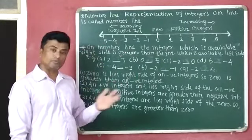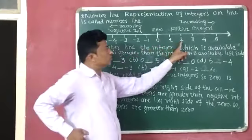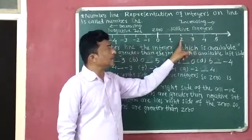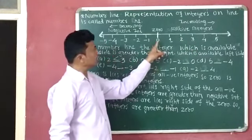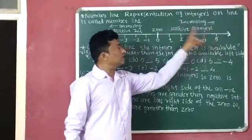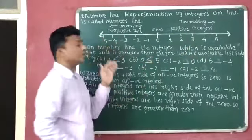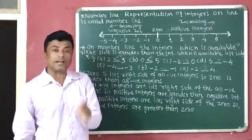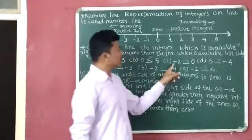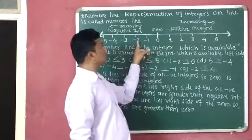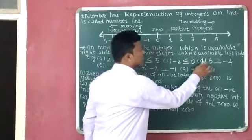Let me explain with a few more examples. Two and three — three is available on the right side of two, so three is greater. Zero and five — five is available on the right side of zero, so five is greater. Minus two and zero — zero is available on the right side of minus two, so zero is greater.